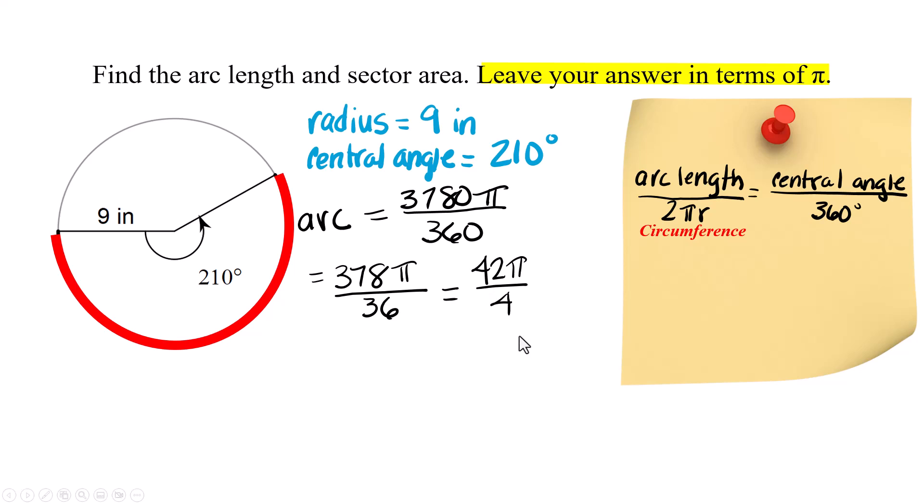Now I can keep reducing this but I don't need a calculator. 42 can be divided by 2 and 4 can be divided by 2. So our answer is 21 times π. Notice I just carried the π around. Name your answer in terms of π. 21π over 2 and this is in inches because the radius is in inches.